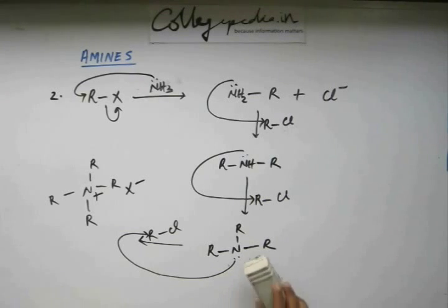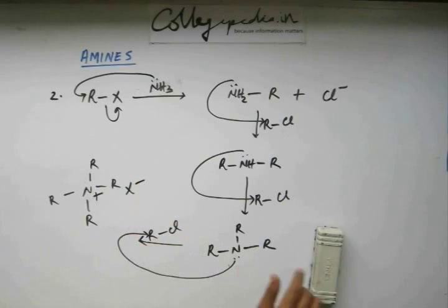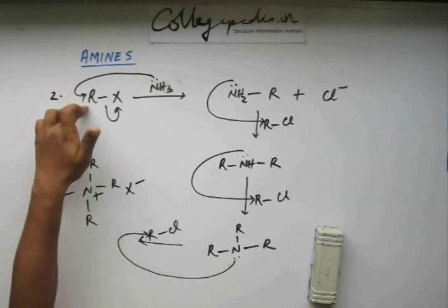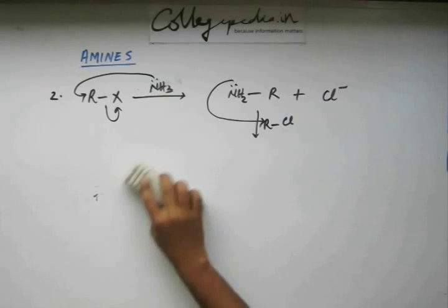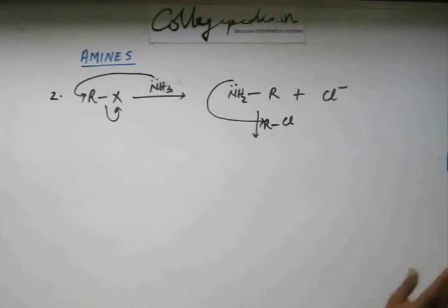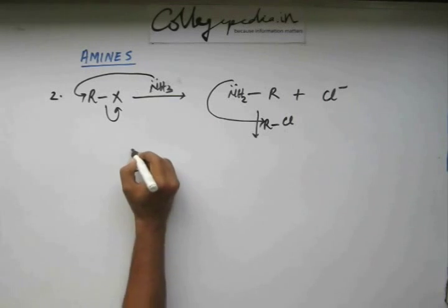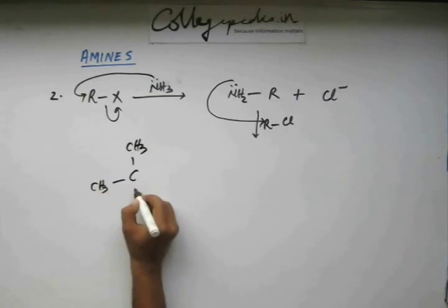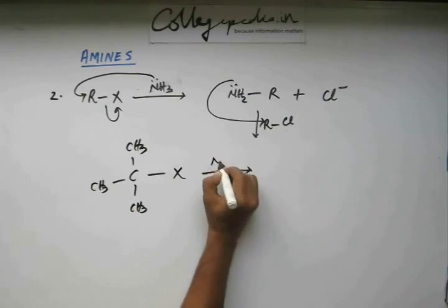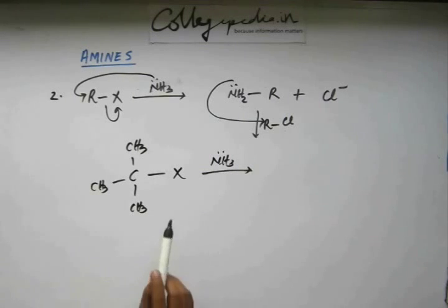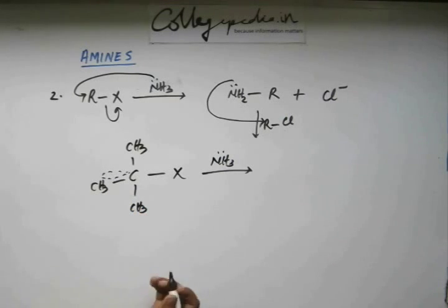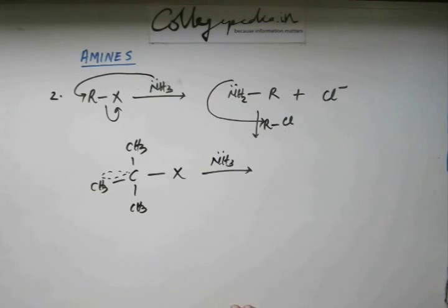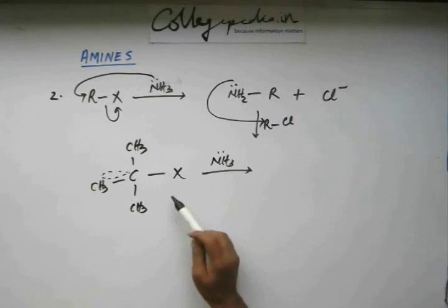One more point: this is of course a substitution reaction involving backside attack (SN2). As we discussed when studying SN2 reactions, this backside attack is not possible when the antibonding orbital is hindered — that is, when the carbon is tertiary. If we have a tertiary alkyl halide and add ammonia, ammonia cannot enter the hindered area, so SN2 will not operate and substitution cannot occur.